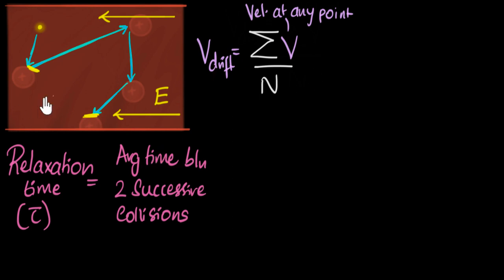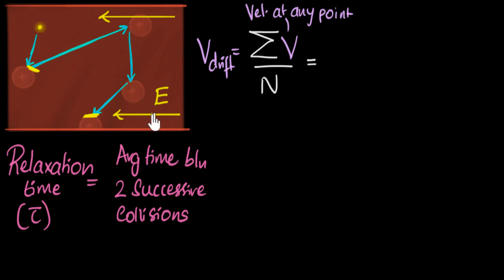Between collisions, electrons are going with a constant acceleration, because between collisions the only force on them is due to the electric field, which is a constant. So the force is constant, the acceleration is constant, meaning it's uniformly accelerated motion. In uniformly accelerated motion, velocity at any point is just the initial velocity u plus at.